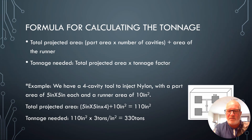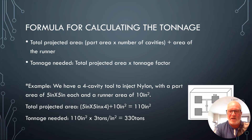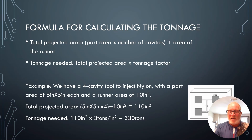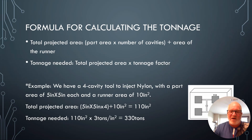For example, a four-cavity tool injecting nylon with a part area of five inches by five inches and a runner area of 10 square inches: Total Projected Area = (5 × 5 × 4) + 10 = 110 square inches. Tonnage needed = 110 × 3 tons per square inch = 330 tons to hold that mold closed.